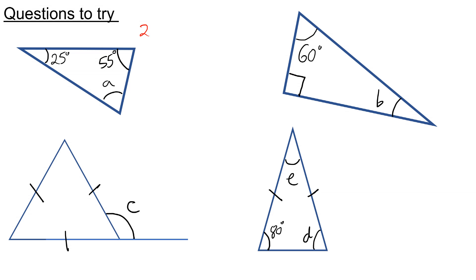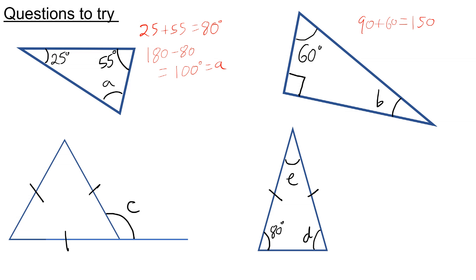Here are the answers. To work out A, I do 25 plus 55, which is 80 degrees. So to work out A, I need to do 180 take away 80, which gives me 100 degrees. And for the one on the right, I have 90 plus 60, that's 150. Subtract that from 180, and we get 30 degrees for B.